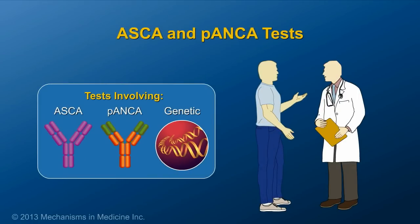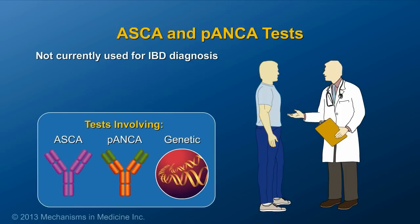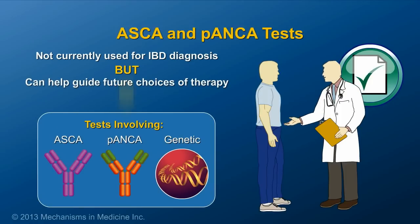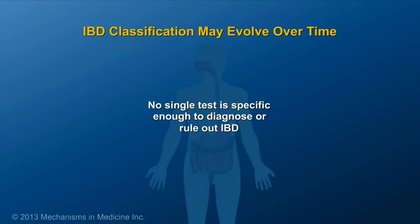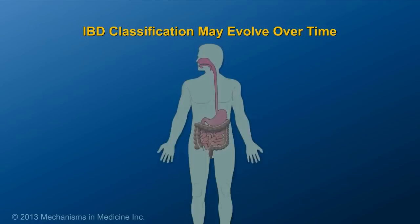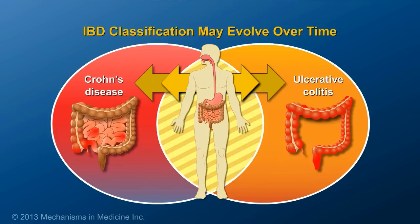ASCA and pANCA tests, as well as certain genetic tests, are not currently used for diagnosis of IBD. However, these tests may be used to guide future choices of therapy. Despite all these available tests, there is no single diagnostic test to definitively diagnose IBD. Occasionally, patients diagnosed with one IBD type may later be reclassified to the other type. This is because classification is based on certain patterns of findings and test results most typically seen. In reality, there may be underlying and complicating factors of the disease which only evolve over time.